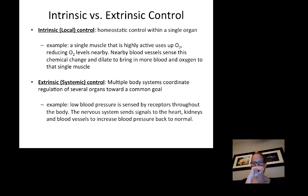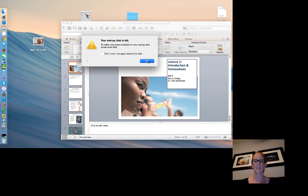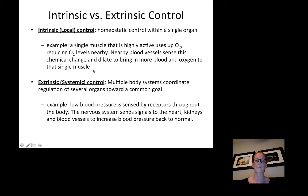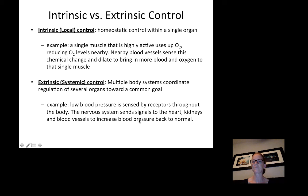There are two types of control. Intrinsic or local control occurs within a single organ — for example, an active muscle uses up oxygen, reducing local oxygen levels, and nearby blood vessels sense this chemical change and dilate to bring in more blood and oxygen to that single muscle. Extrinsic control involves multiple body systems coordinating regulation of several organs toward a common goal — for example, low blood pressure is sensed by receptors throughout the body, and the nervous system sends signals to the heart, kidneys, and blood vessels to increase blood pressure back to normal.